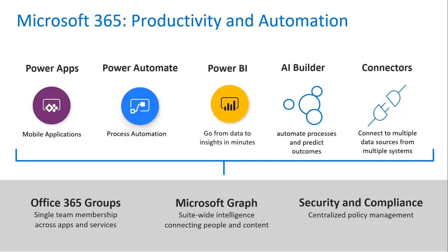The other side is the productivity and automation side. There's the Power Platform — Power Apps, Power Automate, Power BI, and Power Virtual Agents. There's also a built-in AI Builder, which is a junior version of many of the cognitive services functions from Microsoft Azure, and something called connectors, which is essentially integration between systems. You can connect one system to another fairly easily using the Power Platform. SharePoint, Teams, and Planner also fall into the productivity side — you can use those apps to automate and build brand new business processes, all backed up by Office 365 Group security.